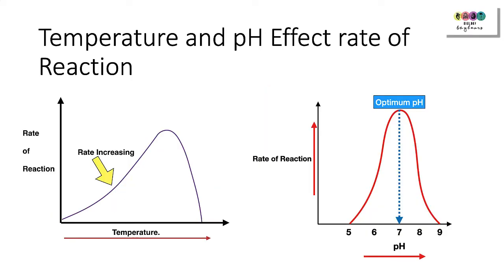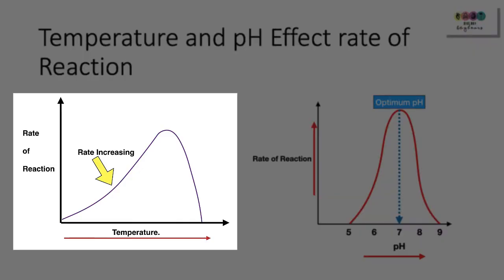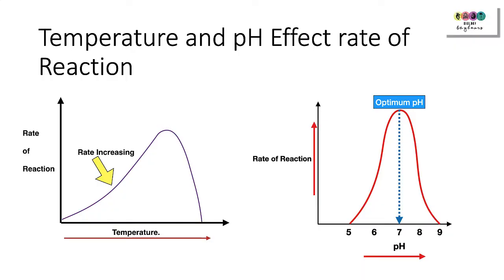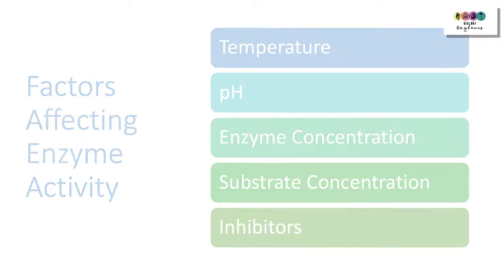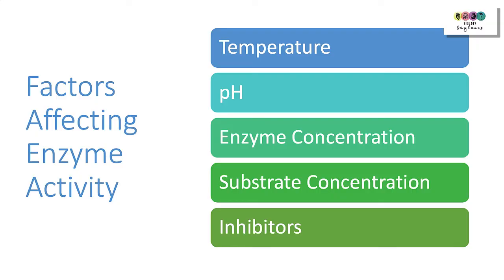Two important graphs appear in the enzyme chapter. The first shows that increasing temperature increases the rate of reaction until the optimum temperature, after which the rate drops off. The same applies to pH, though the pH peak is narrower, showing less tolerance for pH changes. As well as temperature and pH, other factors affecting enzyme activity include enzyme concentration, substrate concentration, and the presence of inhibitors.